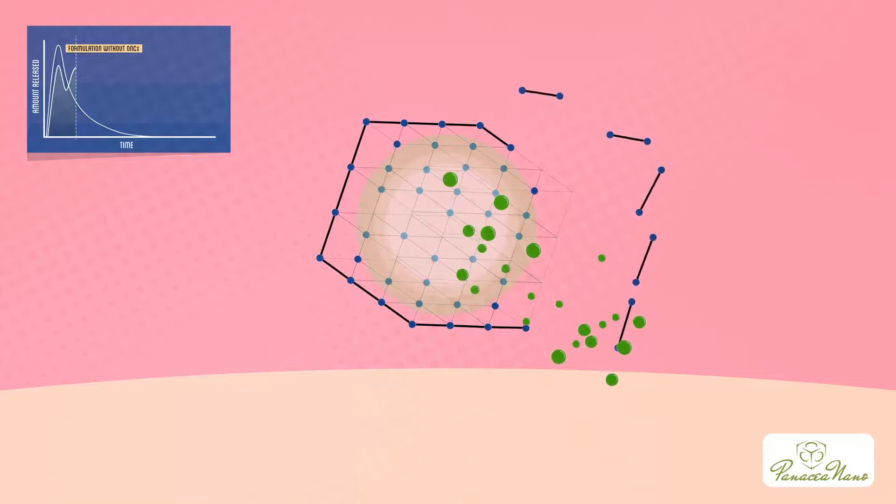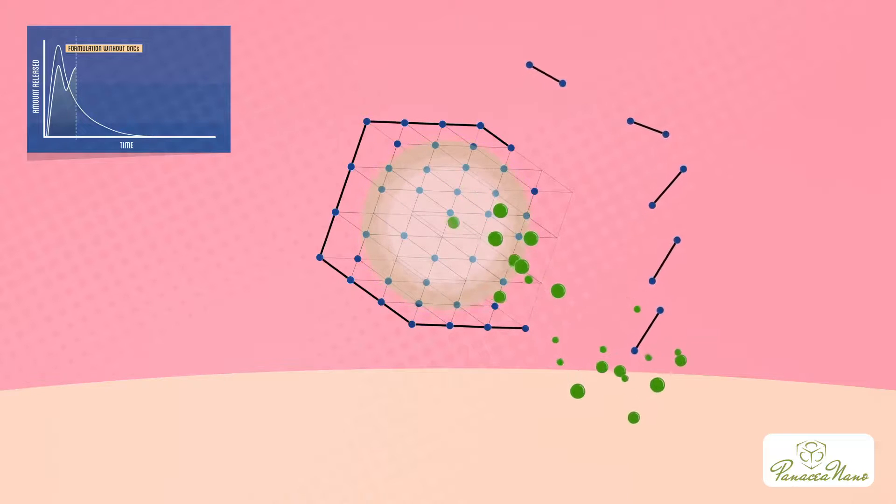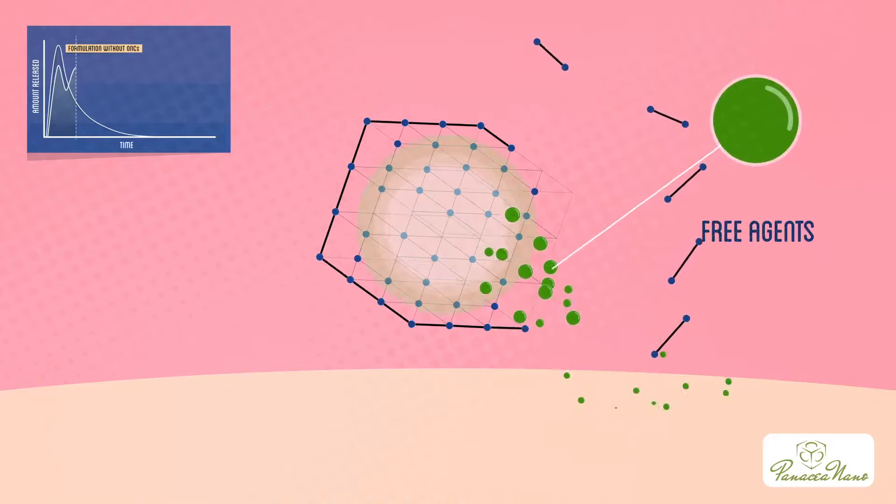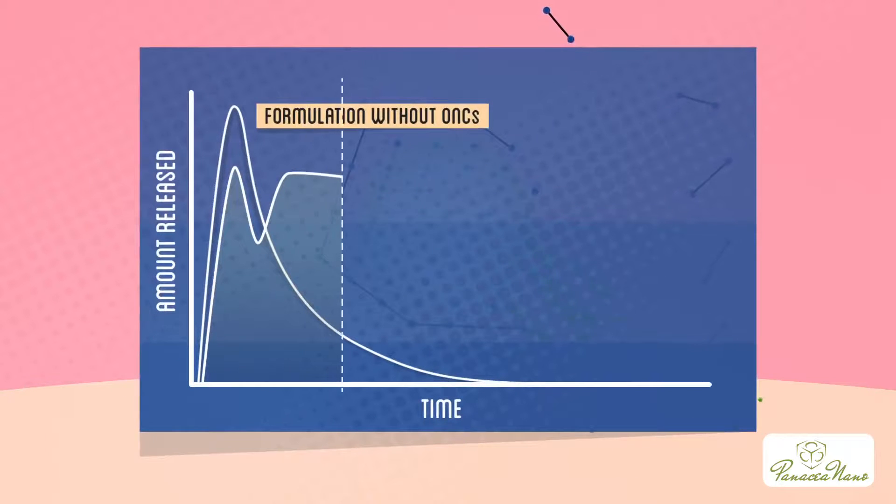As more and more trapped agents escape the ONCs, they replenish the supply of free agents. The second bump in the curve is from the agents stored in the ONCs that have escaped. This constant supply of free agents is the reason there is a steady release to the skin surface.